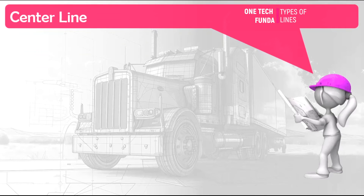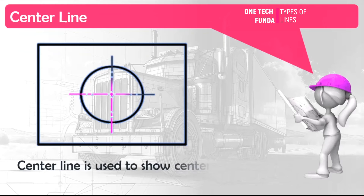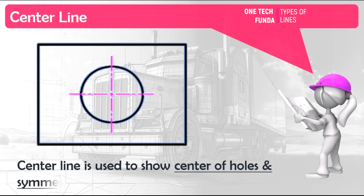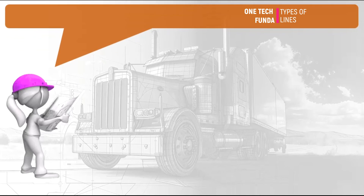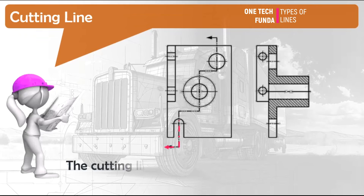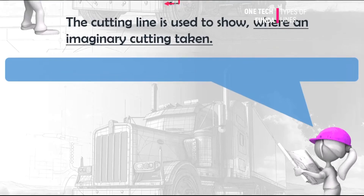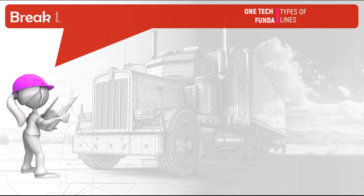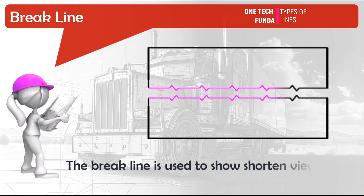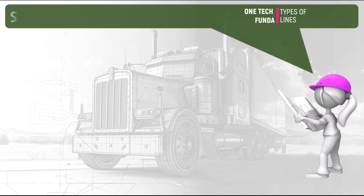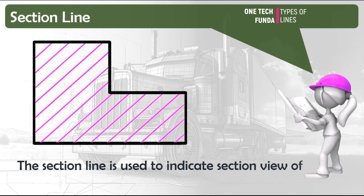Center line is used to show the center of holes and symmetrical features. Cutting line: the cutting line is used to show where an imaginary cut is taken. Break line: the break line is used to show a shortened view of a long part. Section line: the section line is used to indicate the section view of a cutting plane.